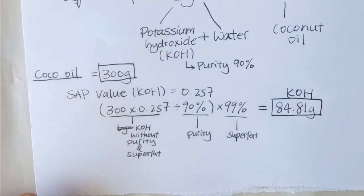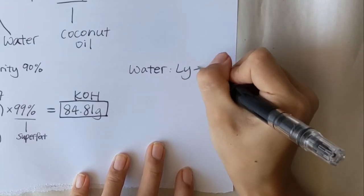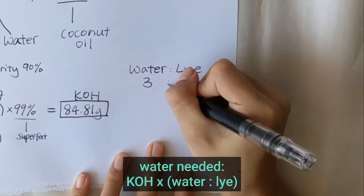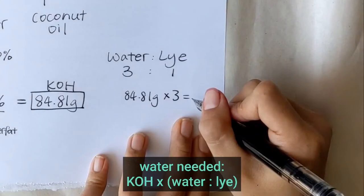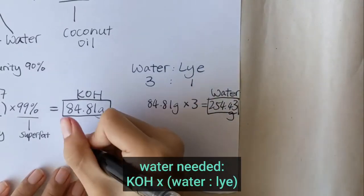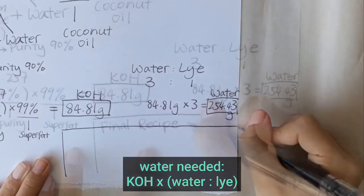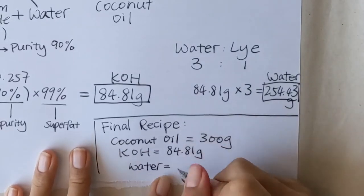As for the water to lye ratio, we have chosen a ratio of 3 to 1. To calculate the amount of water needed, take the amount of KOH and times it by the water to lye ratio. And here, we get 254.43 grams of water. And that gives us our final recipe.